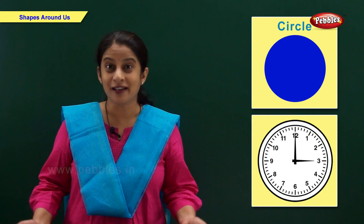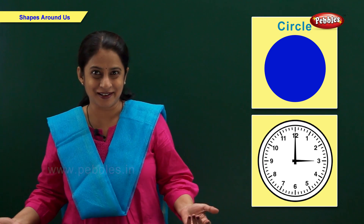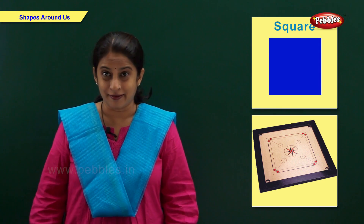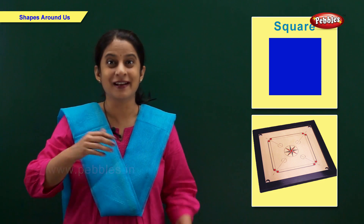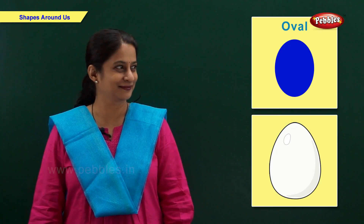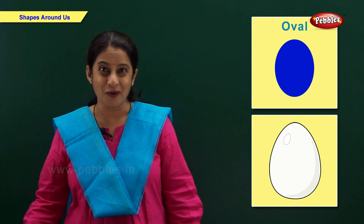Now I'm going to show you some examples of shapes. Circle — the shape of this clock is like a circle. Square — the shape of this carom board is like a square. Rectangle — the shape of this photo frame is like a rectangle. Oval — the shape of this egg is like an oval.